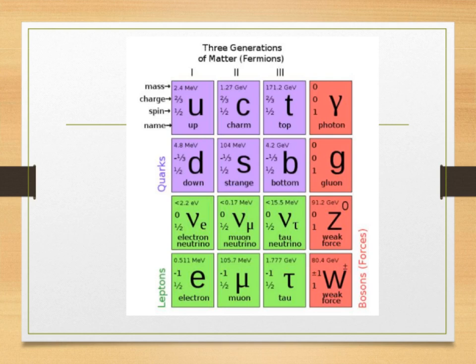Overall there are 12 fundamental particles. We have our 6 quarks: up, down, charm, strange, top, and bottom. We have our 6 leptons: the electron neutrino, our muon neutrino and our tau neutrino, and our electron, muon, and tau. Muon and tau being heavier versions of the electron.